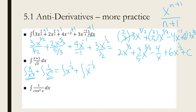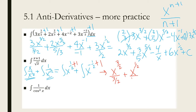Now that I have x with exponents, I can apply the rule. Adding one to each exponent, I'm going to have x to the 3/2 over 3/2, plus x to the 1/2 over 1/2. I'll put my plus C at the end after I fix these. So this simplifies to 2/3 x to the 3/2 plus 2x to the 1/2 plus C.